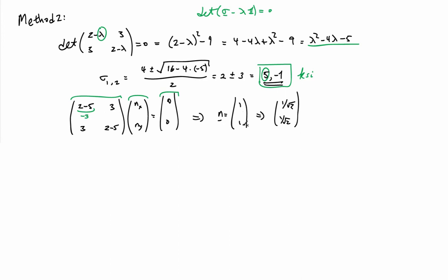So one solution is to pick n is equal to 1, 1, and we usually normalize these to be of unit length, so 1 over square root of 2, 1 over square root of 2.